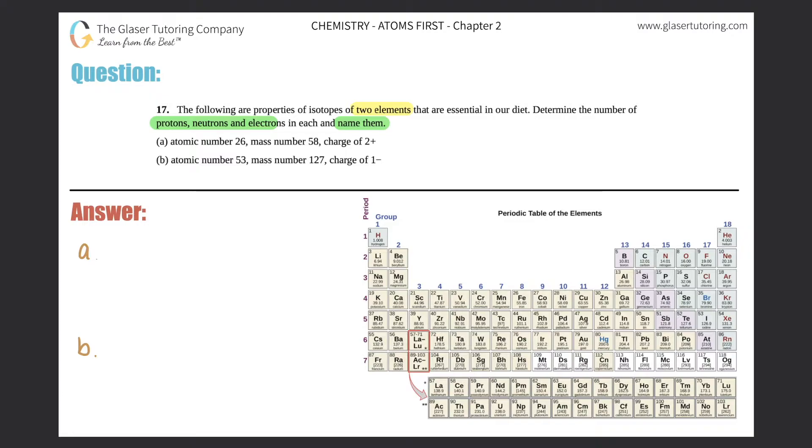Alright, so for A, I see that we have an atomic number of 26, a mass number of 58, and a charge of plus 2. So we should know that the atomic number is always the number of protons. And because of this, this is the identity of the element. So every single element has a different atomic number, a different number of protons.